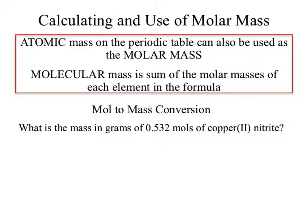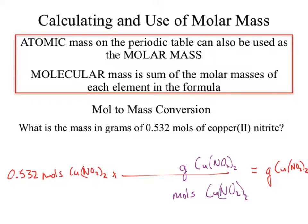Convert: what is the mass in grams of 0.532 moles of copper nitrite? I wish I had taken notes on that molar mass we calculated. Notes can be useful. We write it out, look at our units, align them so they cancel. Conveniently we noted our molar mass was 155.57 grams per one mole. The units cancel and we're left with grams.